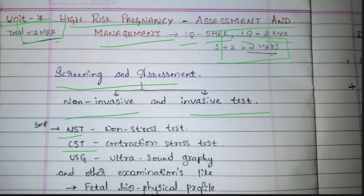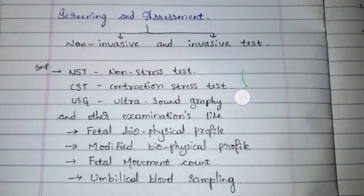Next is USG — ultrasonography. In this we will see if any defect is present in the baby, whether the baby is growing well, if the baby is suffocated, or if there are any malpositions. These three examinations are very important. Apart from this, other test names useful for examination purposes include fetal biophysical profile, modified biophysical profile, fetal movement count, and umbilical blood sampling.